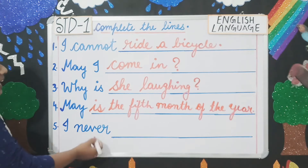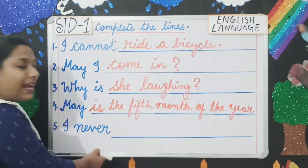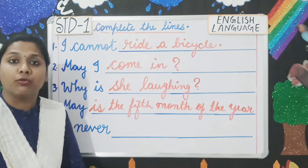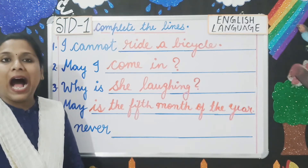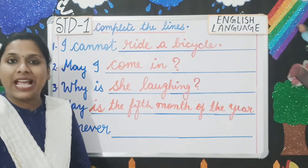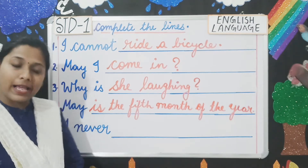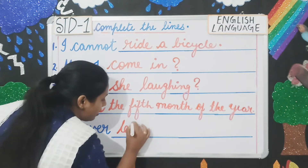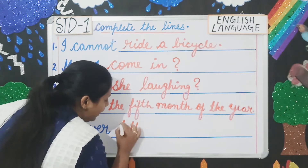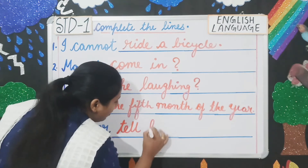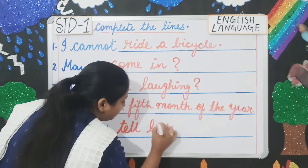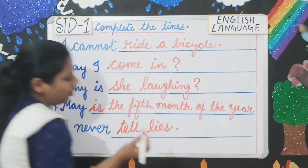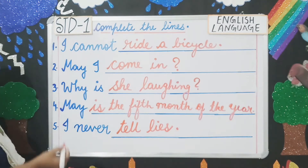Next is 'I never.' You will write something which you never do. For example, you can write 'I never tell lies.' And then you will put a full stop.